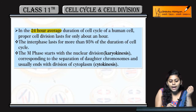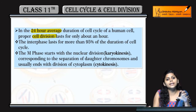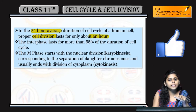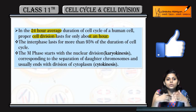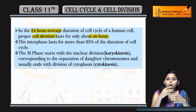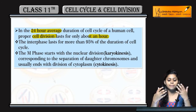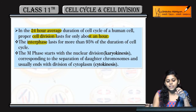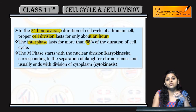The actual cell division — meaning mitosis — lasts for only about one hour. The rest of the time is cell preparation, meaning interphase. Interphase accounts for 95% of the duration of the whole cell cycle.